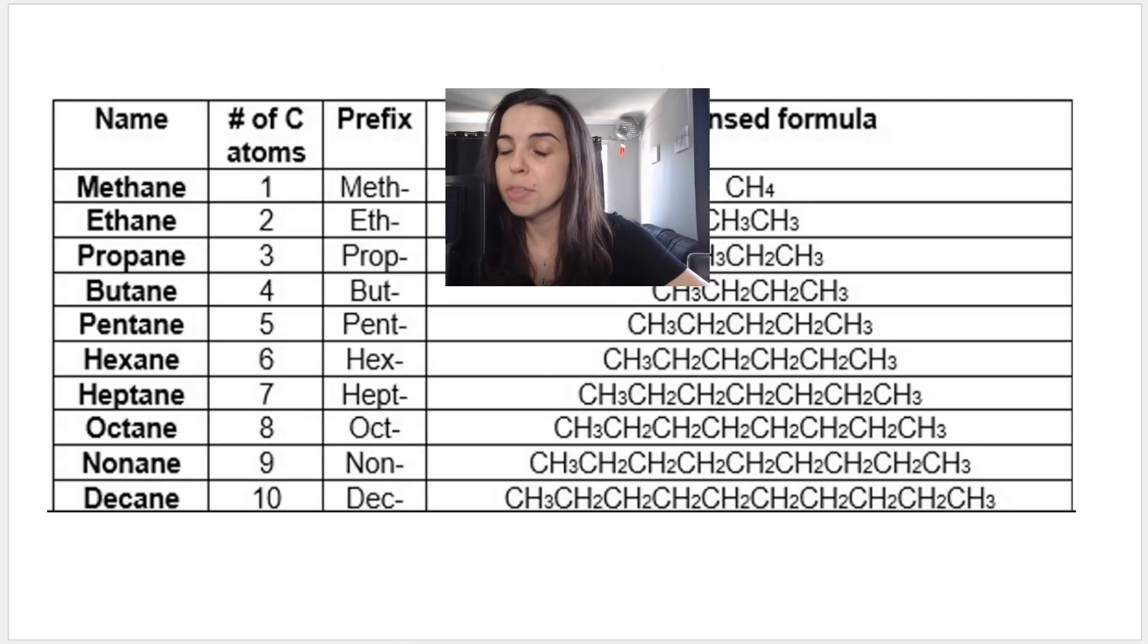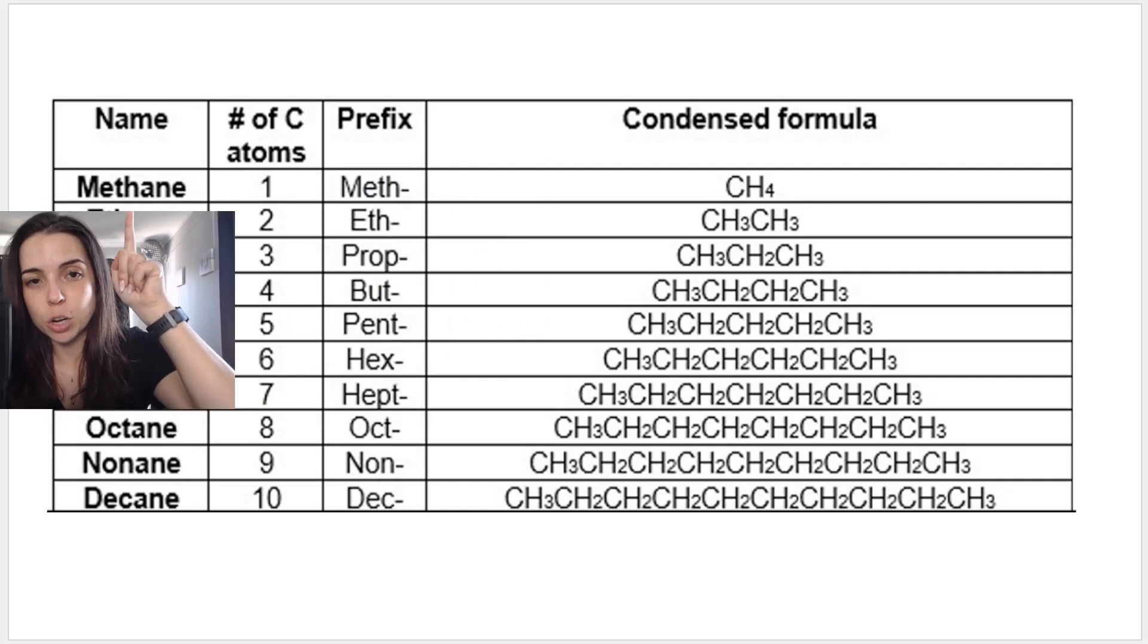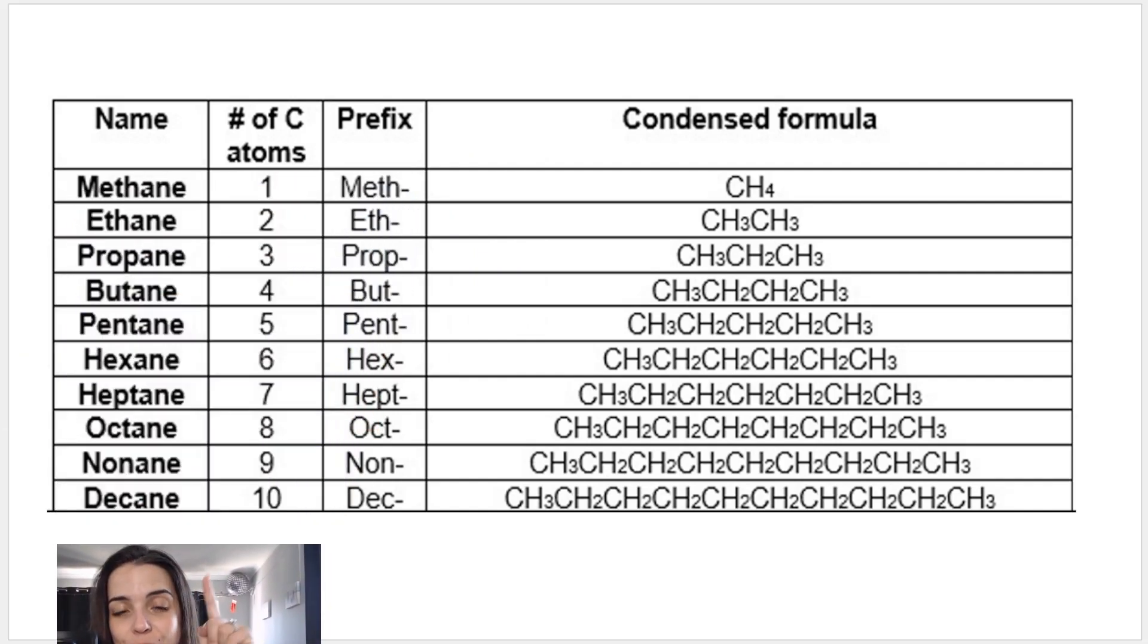As a reminder, when you name the parent chain or the longest chain, it's very important. If there are one carbons, the parent chain will be methane, two carbons ethane, and so on. You can read this list.